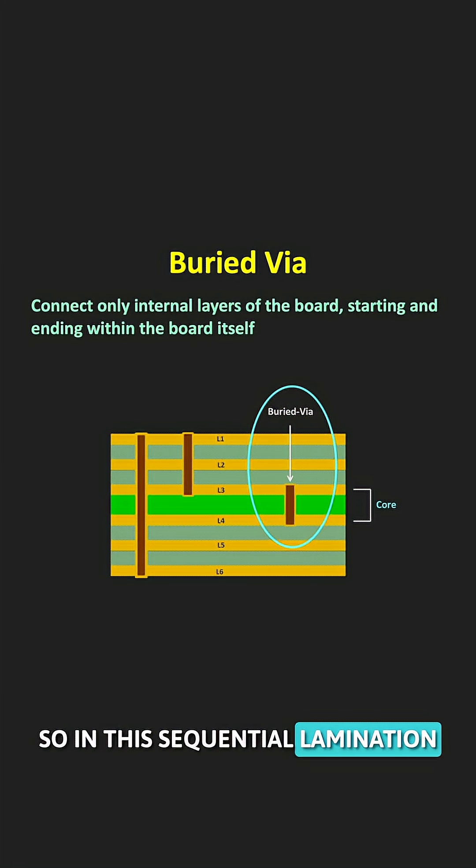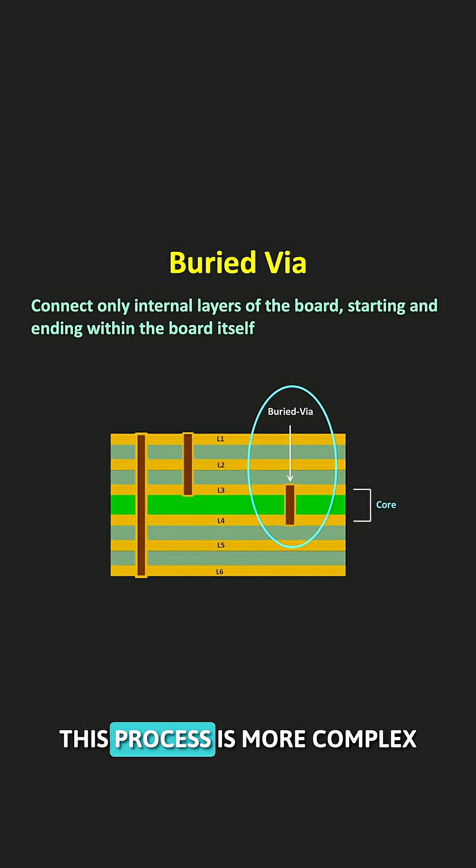In sequential lamination, each PCB layer is first laminated and then drilled. Because of that, this process is more complex and costly. That is why making buried and blind Vias requires many steps.